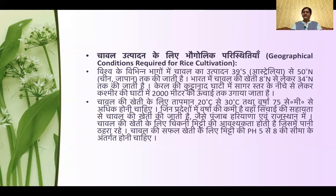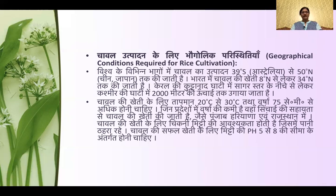The optimum temperature for rice farming is 20-30 degrees Celsius. The required rainfall is about 75 cm. If there is insufficient rainfall, irrigation can also be used, as is done in Punjab, Haryana, and Rajasthan.